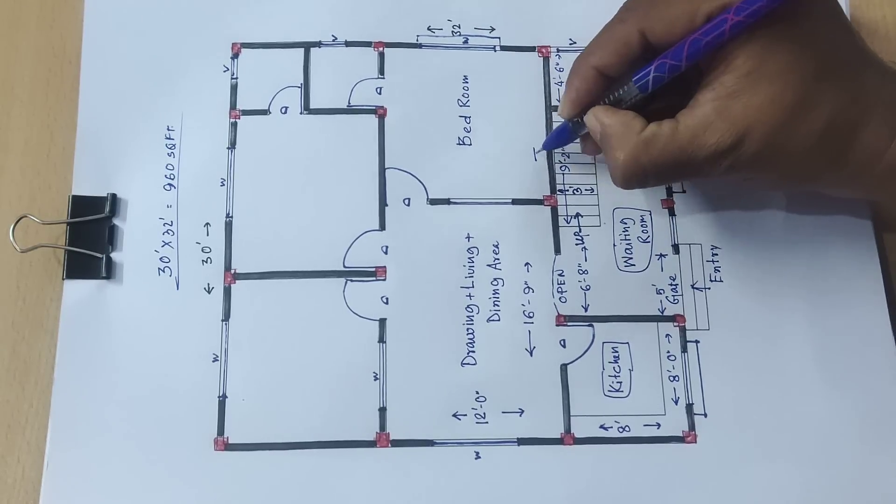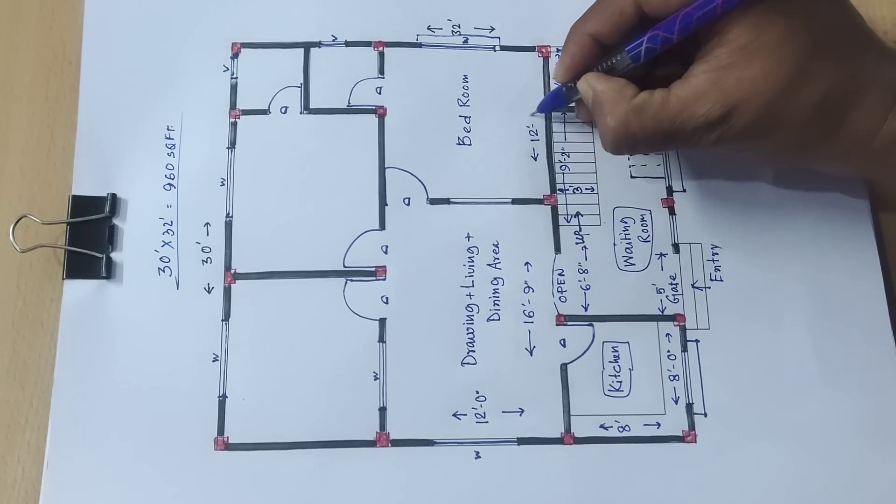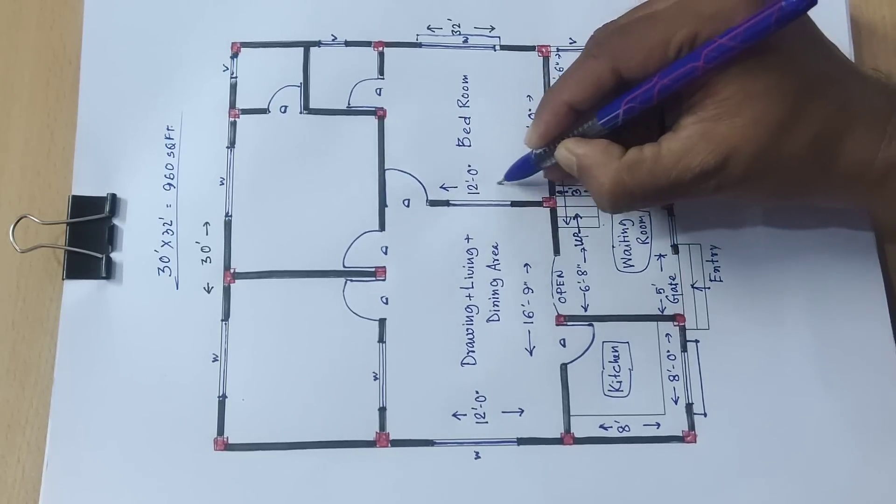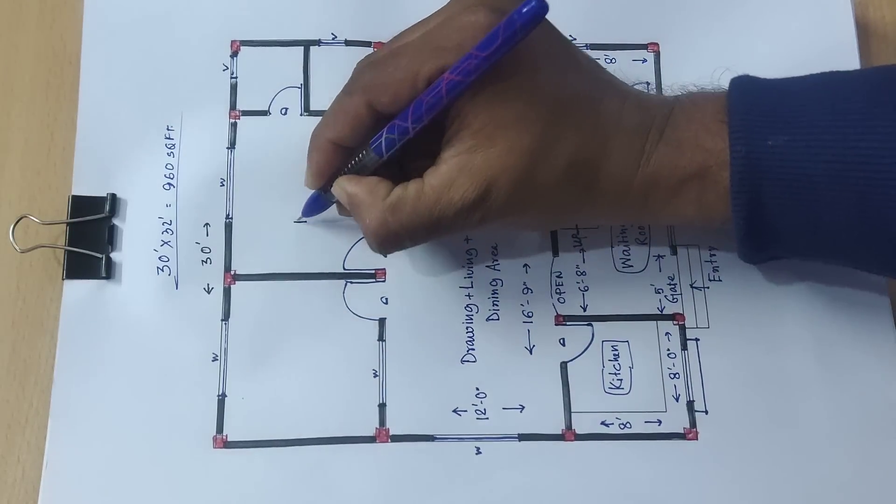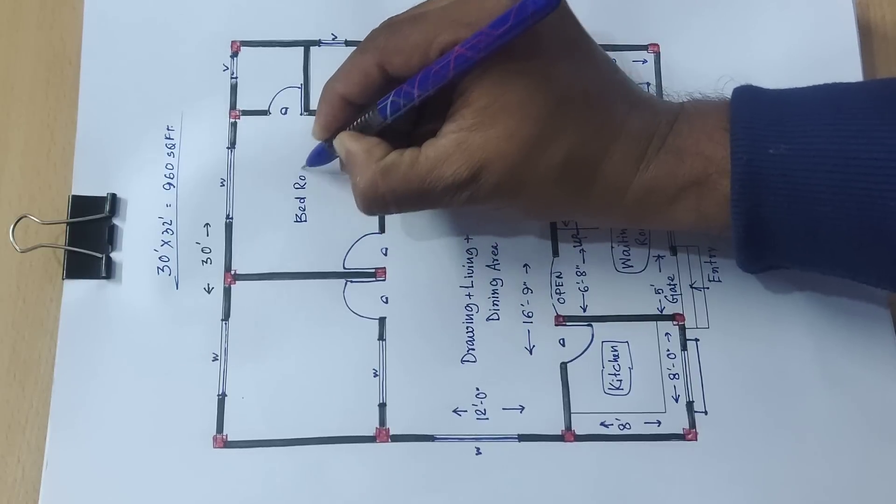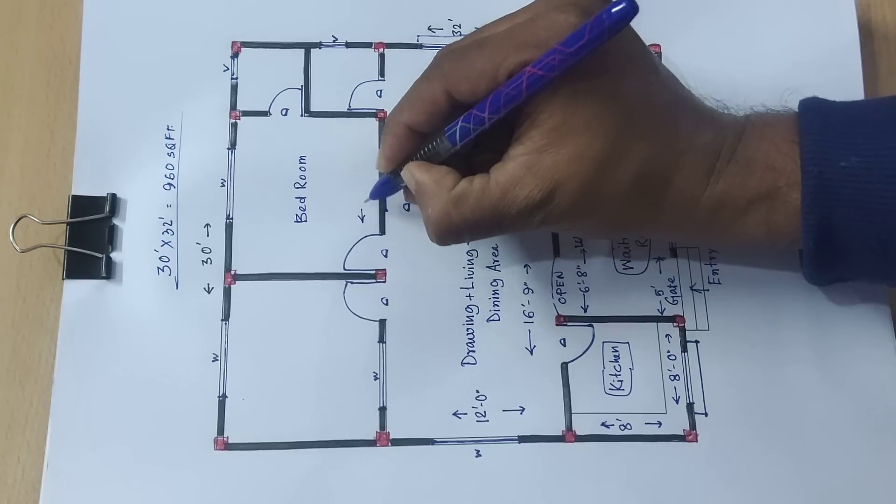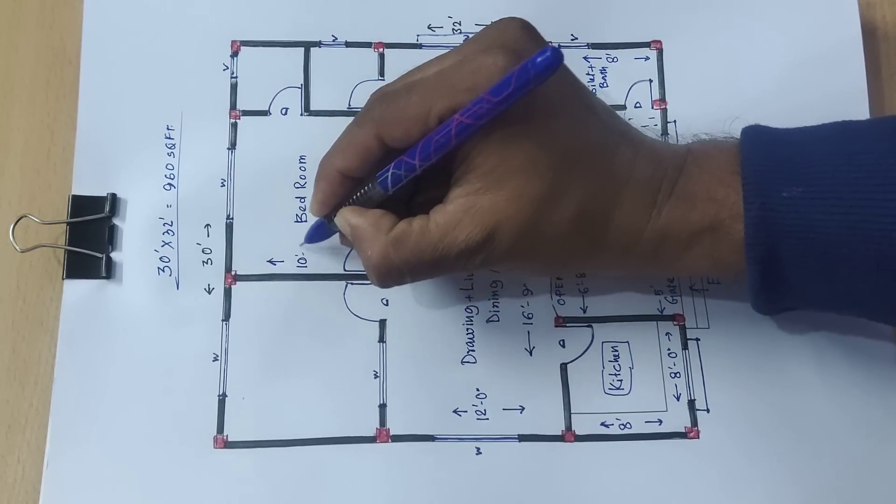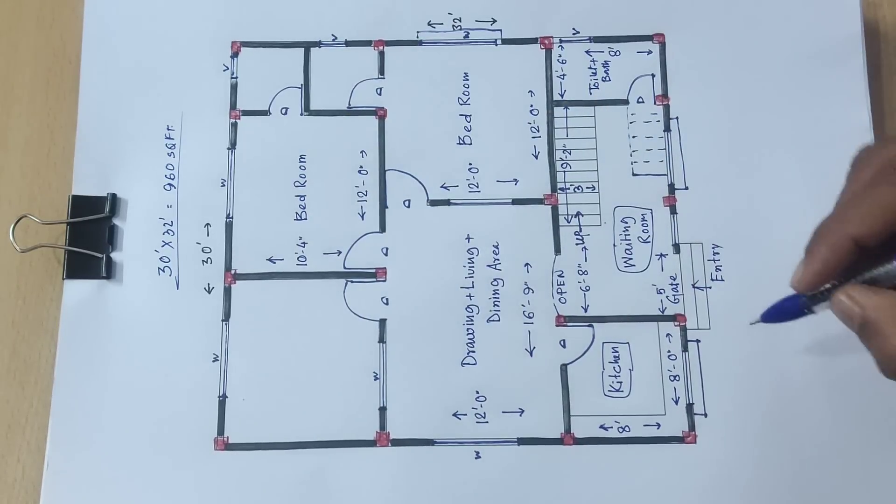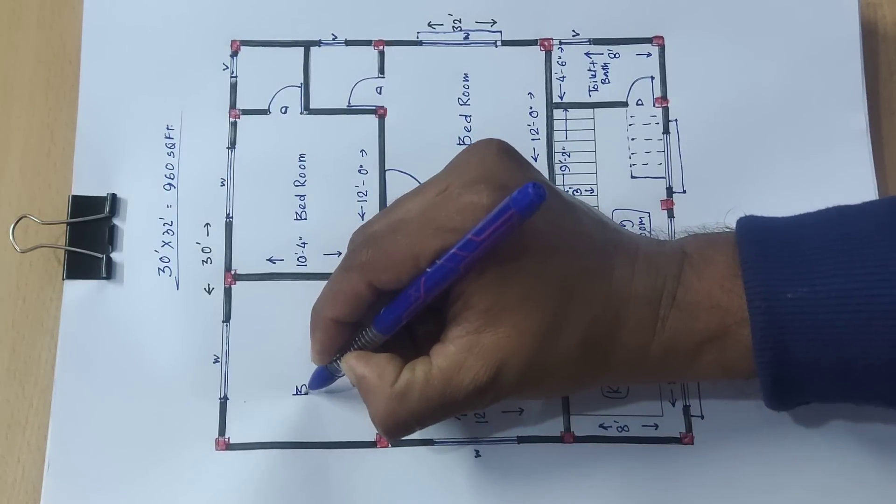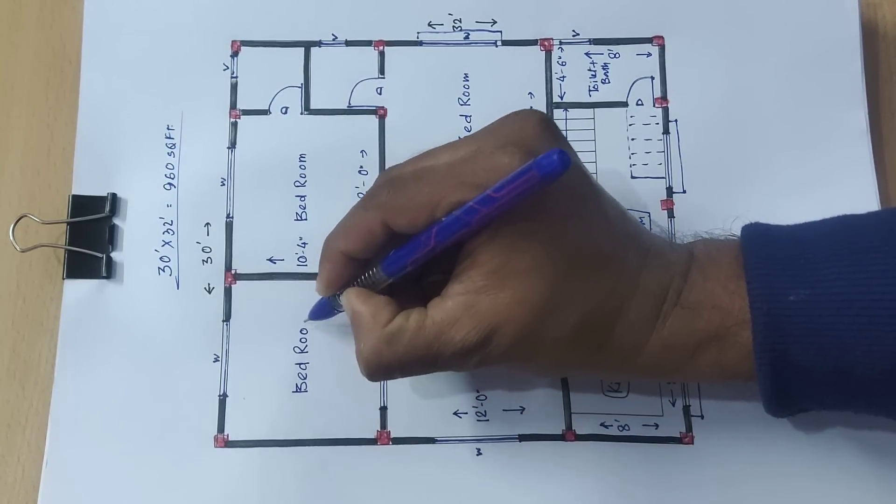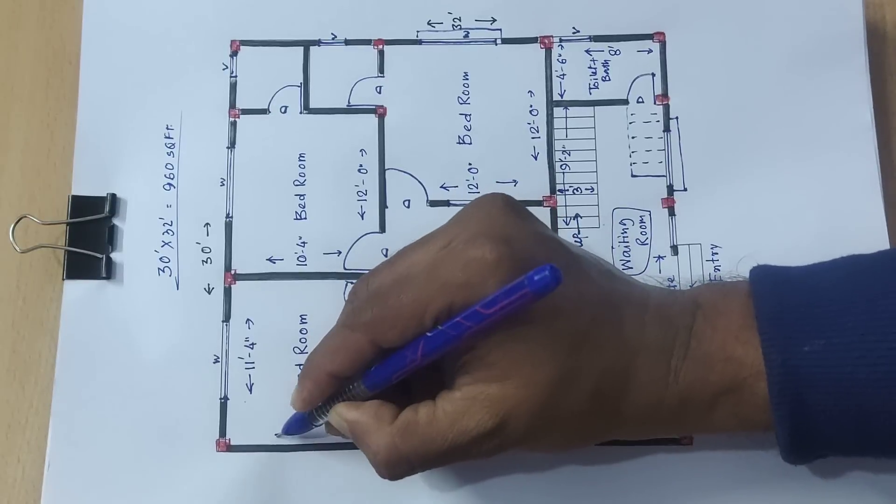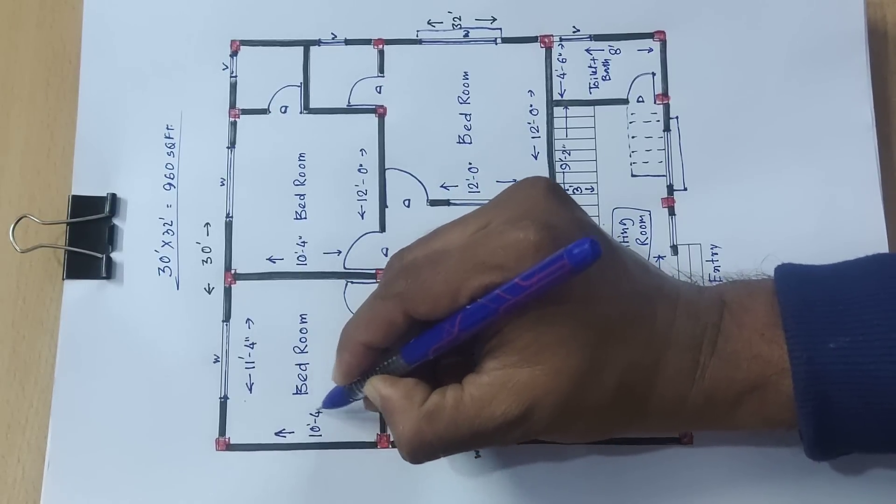Distance 12 feet and this side distance 12 feet. Next bedroom, this is bedroom and distance 12 feet and 10 feet 4 inch.